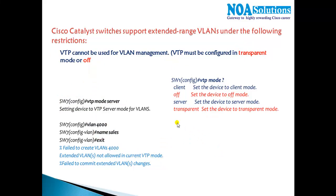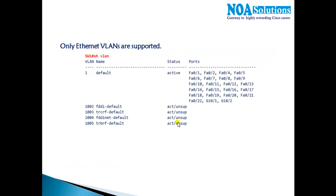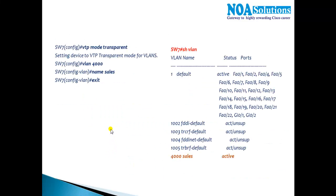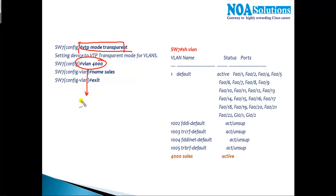Once I change the VTP mode to transparent mode, I'm able to create VLAN 4000 without any problem — it's part of the extended range. You can see VLAN 4000 named 'sales' is active, which you can verify using the show vlan command. The screenshot also shows VLAN 1 as default and the four VLANs belonging to FDDI or Token Ring networks.